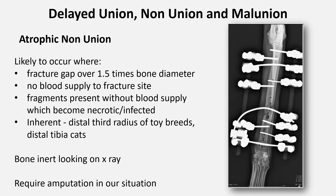Biologically inactive or atrophic non-unions are not viable and require revision surgery. They are very likely to develop in any situation where there is a fracture gap of over one and a half times the diameter of the bone, where there is no blood supply to the fracture site, where fragments with no blood supply become necrotic and infected, and in the inherent atrophic non-unions we see, for example, in the distal third of the radius of toy breeds. On x-ray, the bone will look very inert, poorly calcified, with no callus formation — there may be sequestra present, a fracture gap, and the ends of the long bones may appear sclerotic and rounded.